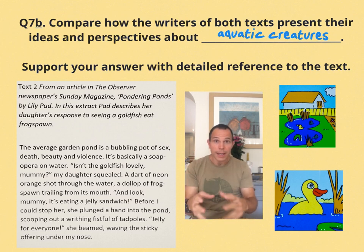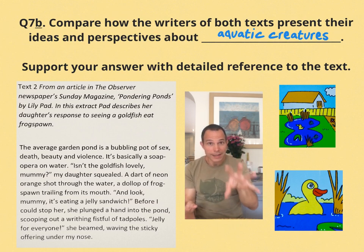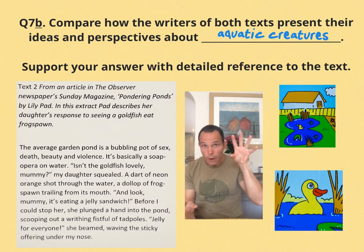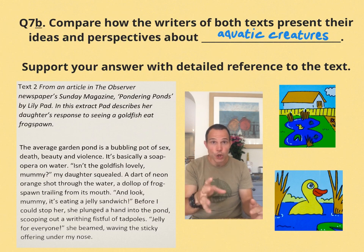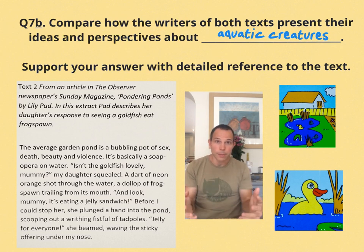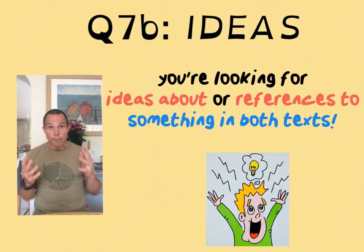Here's our second text — an extract plucked from an article on ponds. Given that the focus of our question is aquatic creatures, when you read the article you'll see that we can extend our attention to include frogspawn as well as fish. Any reference to either of those two underwater wanderers can find its way into our answer booklet.